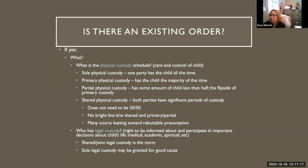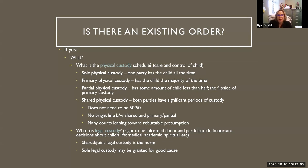Primary physical custody is when a party has the child most of the time, and partial is the flip side of primary. Shared physical custody is when both parties have significant periods of custody. Many lay people — and even some professionals — think that means it needs to be 50-50, but it doesn't. The statute simply says both parties have significant periods of custody. In practice it's going to be probably close to 50-50, but there's no bright line to determine whether a particular schedule is called shared or primary-and-partial.